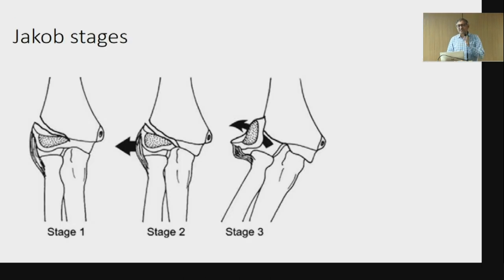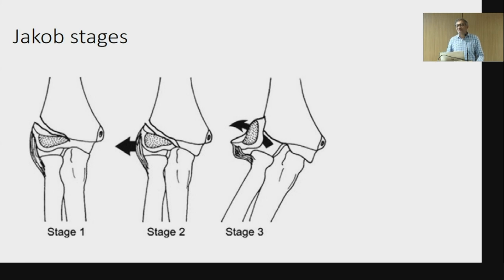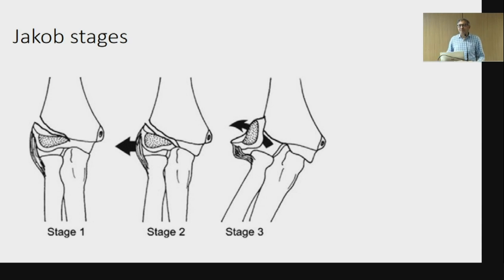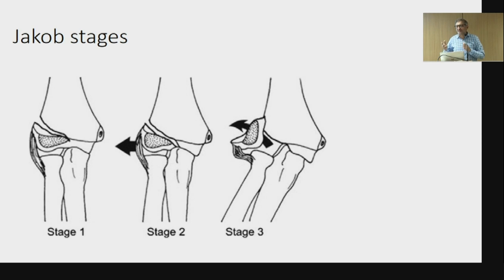What we are going to talk about is Jacob's stage 1. This article described the stages of lateral condyle fractures, which subsequently people started using as a classification — but this is not a classification; these are stages of lateral condyle fracture. In many textbooks, stage 1 is described as undisplaced, which is also a misnomer because the classification itself says less than 2 mm displacement. So if it's less than 2 mm displaced, how can it be undisplaced?